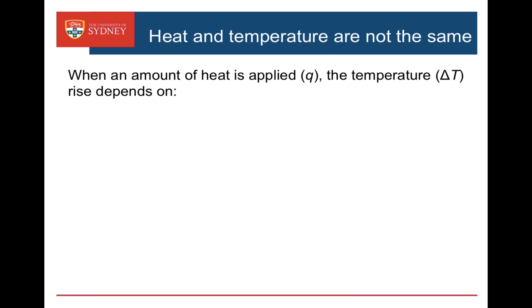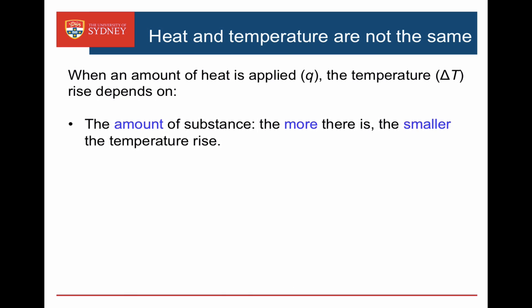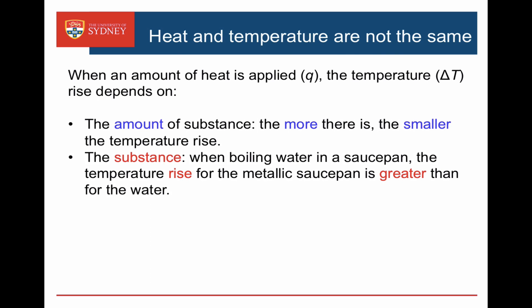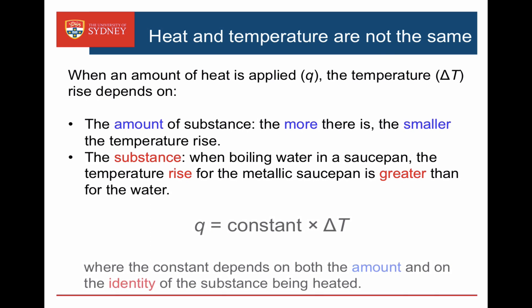When we supply an amount of heat Q to a substance, the temperature change delta T depends on how much stuff we've got. It takes more energy to heat up 100 grams of water to boiling than 20 grams. It also depends on the substance being heated — the temperature rise for an aluminium saucepan is generally greater than that for the water. So heat Q and temperature change delta T are proportional, but that constant of proportionality depends on both the amount and the identity of the substance.